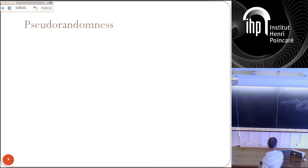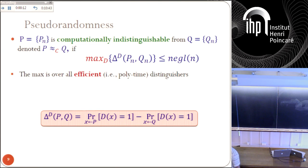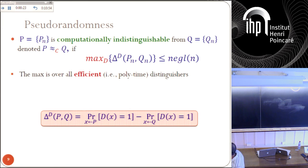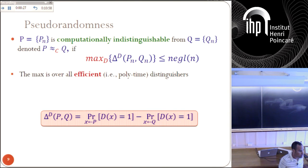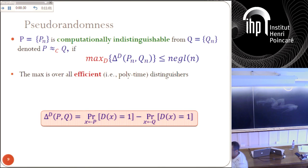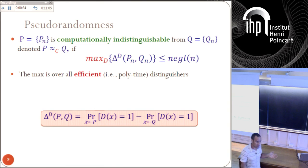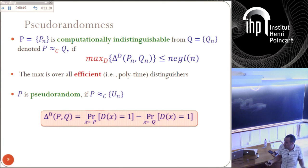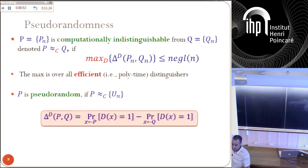This leads to the notion of pseudo-randomness. Before we say what pseudo-randomness is, let's say what computationally distinguishable means: two distributions are computationally distinguishable if no computationally bounded adversary can distinguish between them. Statistically distinguishable means no adversary at all can distinguish; here we relax this requirement and only require that computationally bounded adversaries cannot distinguish. And then we say the ensemble P and ensemble Q are computationally indistinguishable. The ensemble P is pseudo-random simply if it is computationally indistinguishable from the uniform string over some domain of size N.